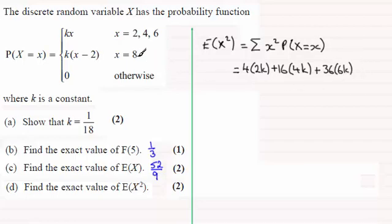And finally when X is 8, 8 squared is 64 times the probability here which will be 6k. So you've got plus 64 times 6k.